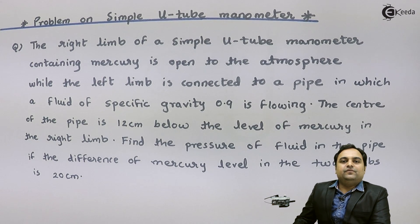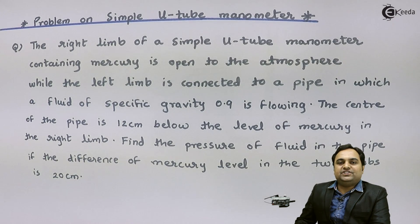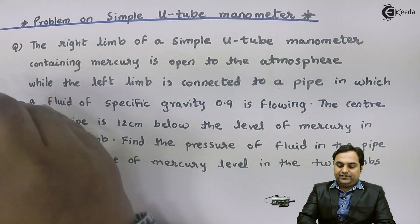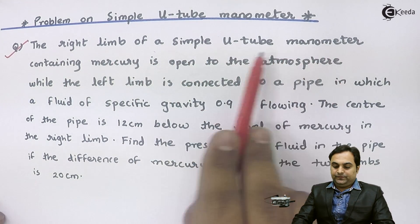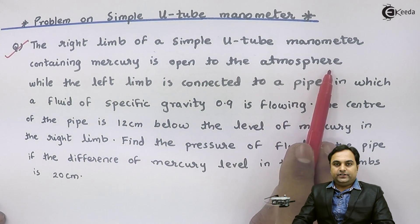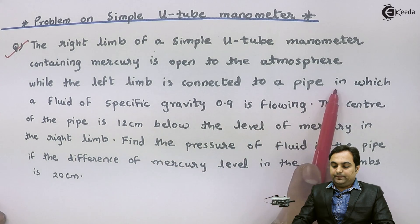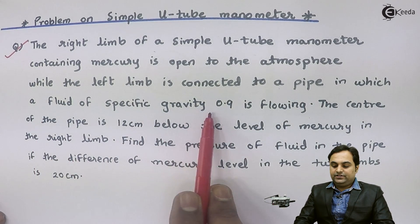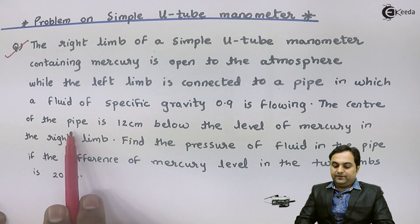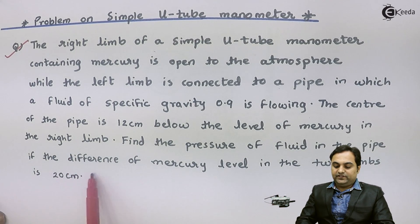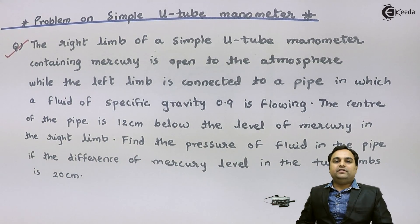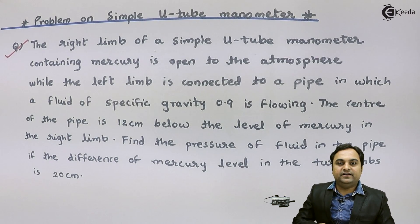In this video we will see a problem of pressure measurement using a U-tube manometer. The right limb of a simple U-tube manometer containing mercury is open to the atmosphere, while the left limb is connected to a pipe in which a fluid of specific gravity 0.9 is flowing. The center of the pipe is 12 centimeters below the level of mercury in the right limb. Find the pressure of the fluid in the pipe if the difference of mercury level in the two limbs is 20 centimeters.